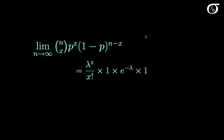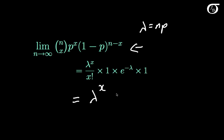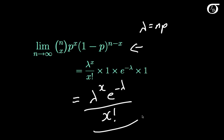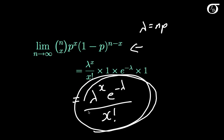And so we have that the limiting value of our binomial distribution as n tends to infinity and lambda equals n times p stays constant is equal to lambda to the x times e to the minus lambda over x factorial, which is the Poisson formula. So we are done — the Poisson distribution is the limiting form of the binomial distribution.